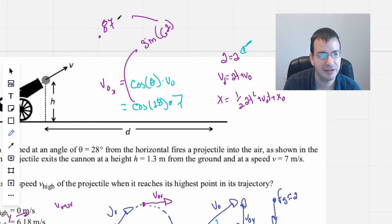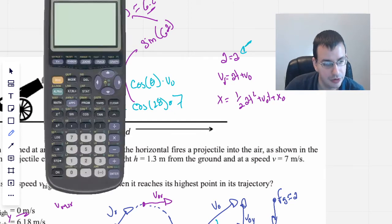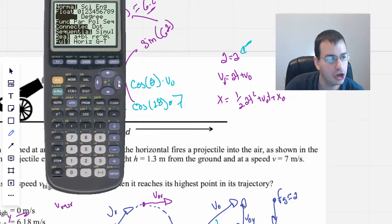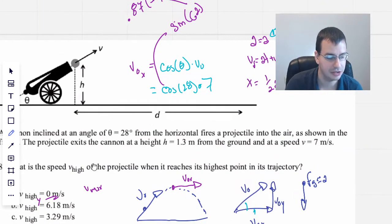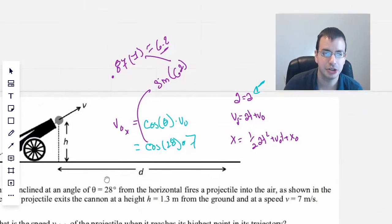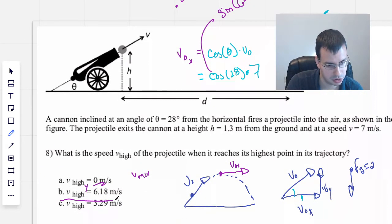So I should probably actually do it for real. I want to make sure it's in degrees. We'll do cosine of 28 times 7, and we get 6.18. So 6.2 is pretty close.